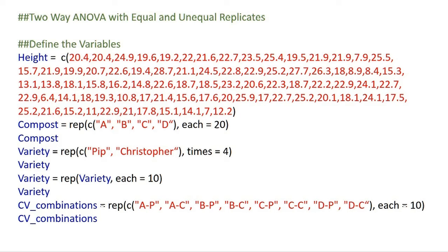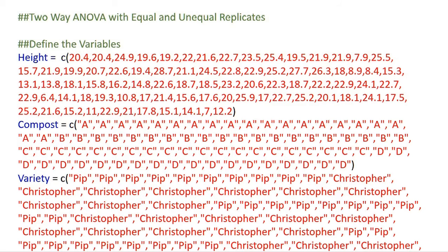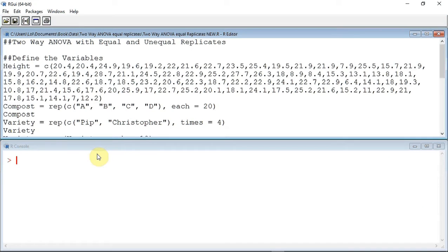So why use the rep command to create some of the variables? Well, if we were to enter these variables with a C option, the script would look a bit like this. As your data samples get larger, and the analysis you want to do becomes more complicated with more factors, the C operator becomes inconvenient. One option is to load the data in from a separate file, and I go over how to do this in my introduction to R screencast. But if you didn't have access to the file, and you wish to have a go at repeating the analysis in this screencast, entering the values for compost and variety would be very tedious. More importantly, however, a slight spelling mistake in one of the Christophers or the Pips would render the results inaccurate.